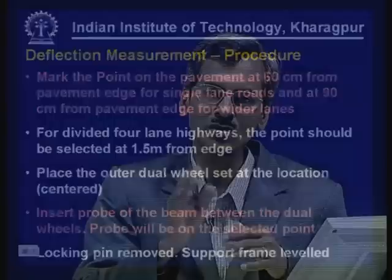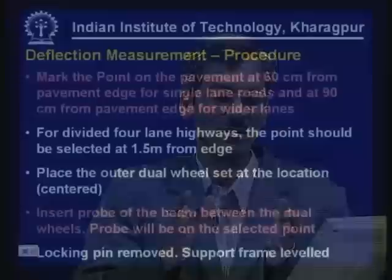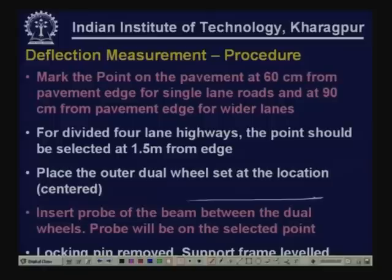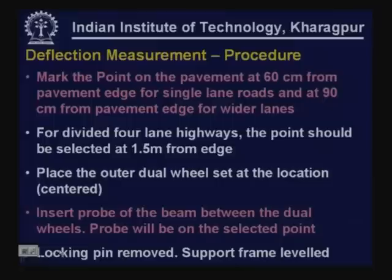The outer dual wheel of the truck must be centered directly over the measurement point. The probe of the beam is inserted between the dual wheels, resting directly on the selected point. The locking pin is removed so the beam can freely rotate about the hinge. The support frame must be leveled. A sketch shows how to select point locations at 0.6 meters, 0.9 meters, or 1.5 meters from the pavement edge for different types of facilities.